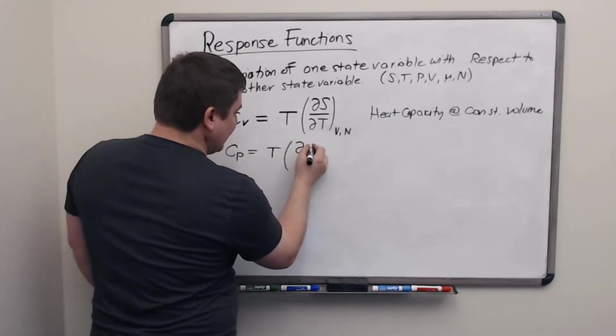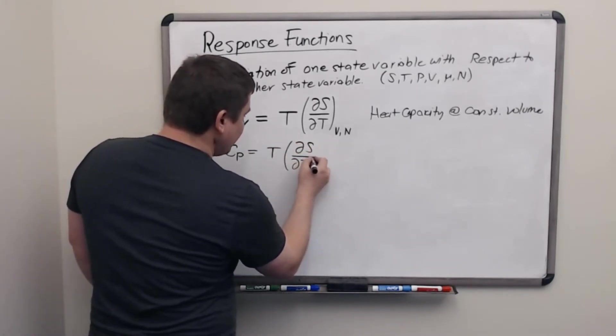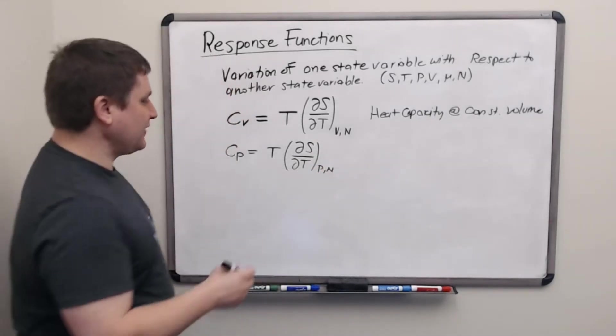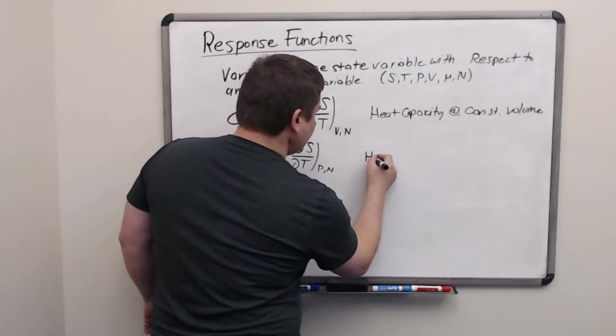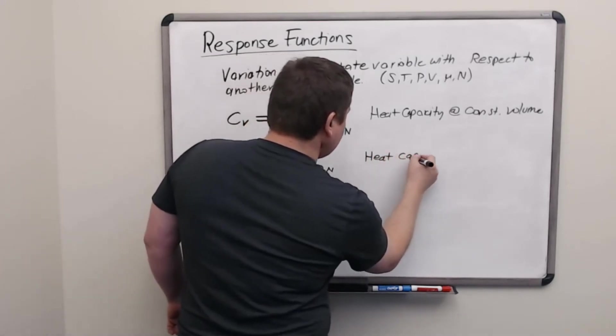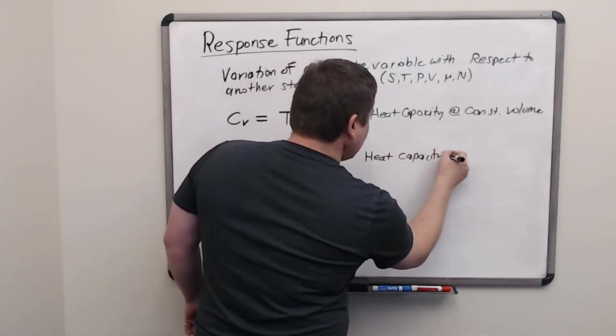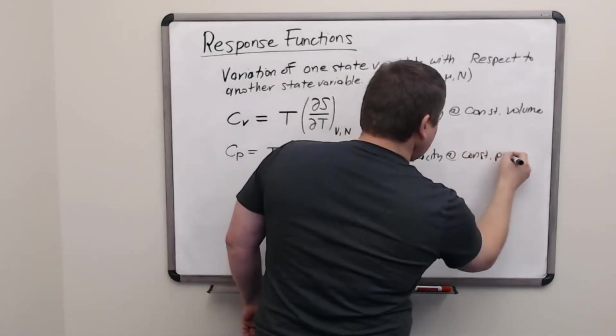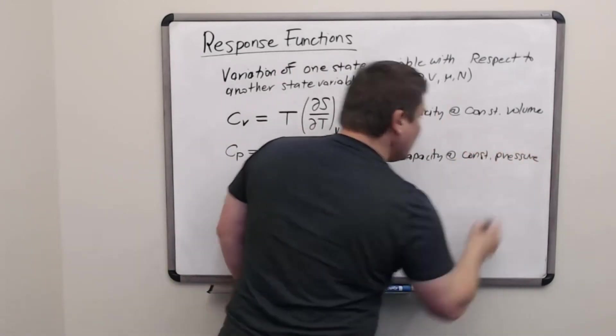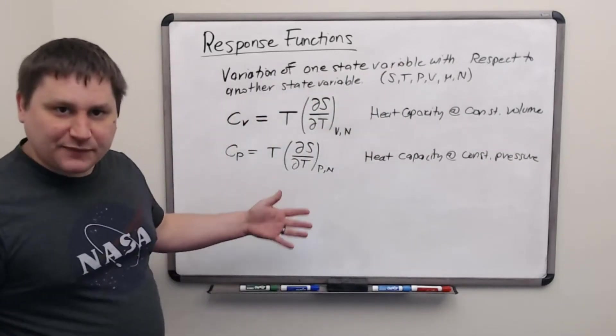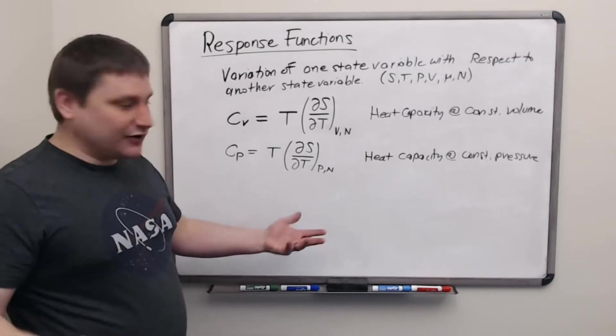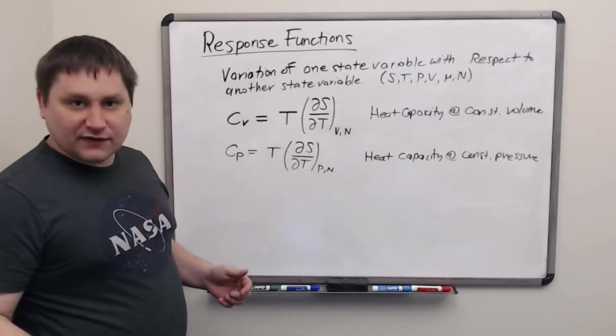So we can probably expect that the other heat capacity is also a response function. This is the heat capacity at constant pressure. The variables in the derivative are the same, but different things are held constant, and that makes it have a different value, PN versus VN.